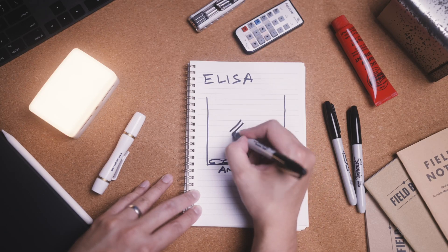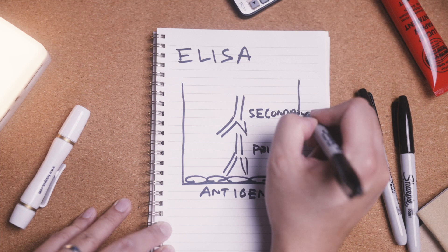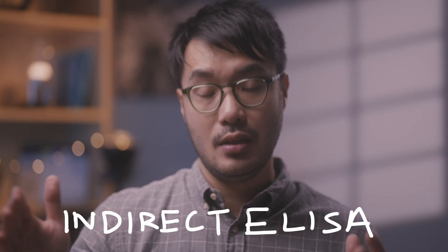The fourth stage is the addition of secondary antibody. This type of antibody binds to a range of primary antibodies, which allows for more versatility in the number of primary antibodies that can be used in one experiment. This is the reason why it's called an indirect ELISA.